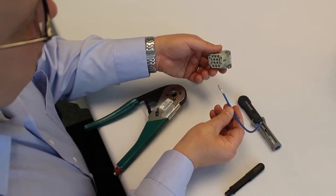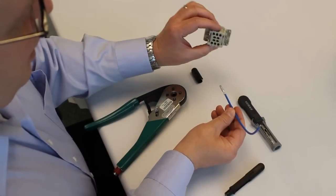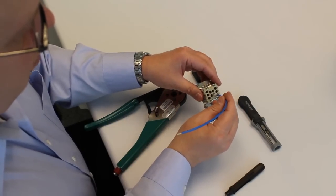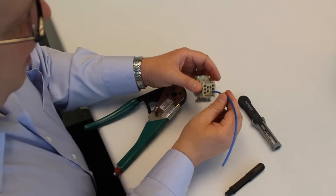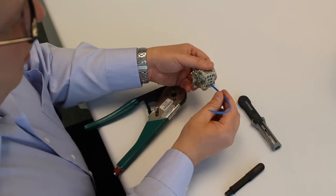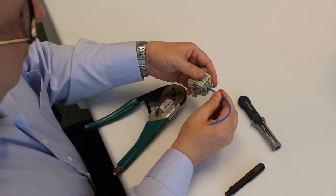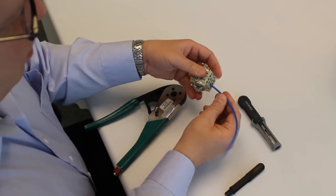For assembly into an insert, we have a Han 10 EE female insert here, and we're going to place the crimp contact at the rear, and you'll hear and feel when the contact is correctly seated in the insert. So it's correctly installed.